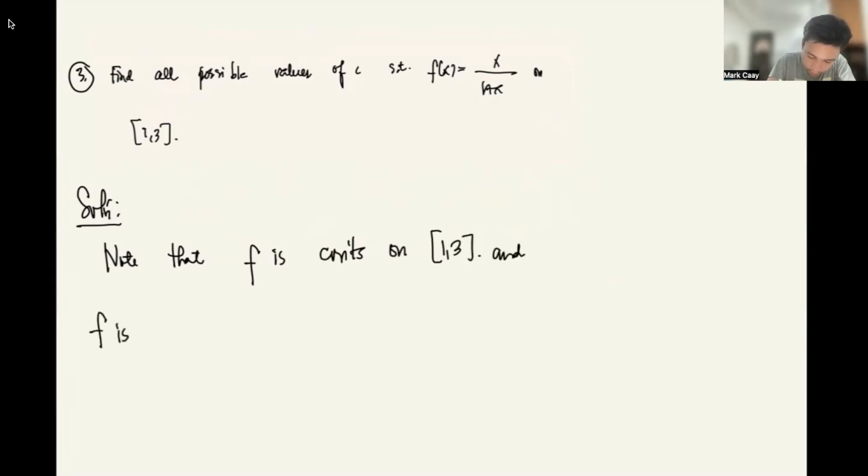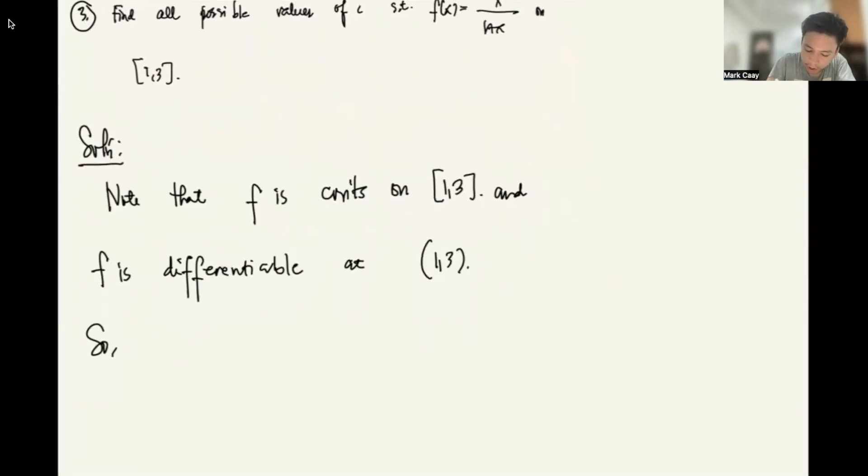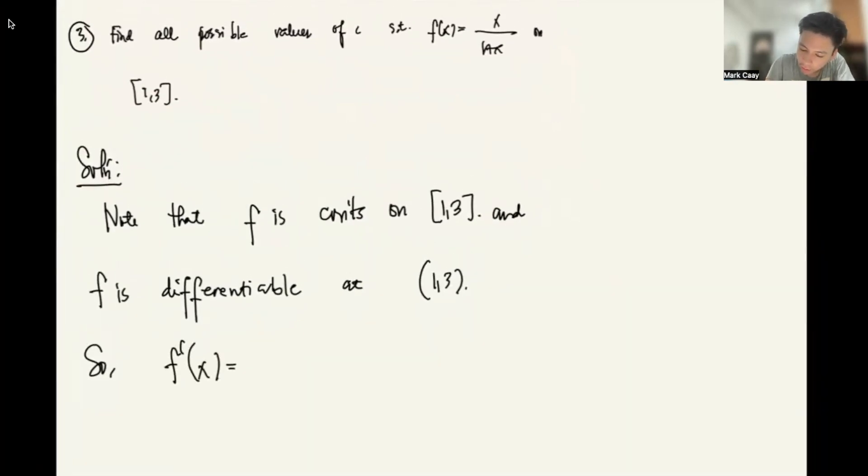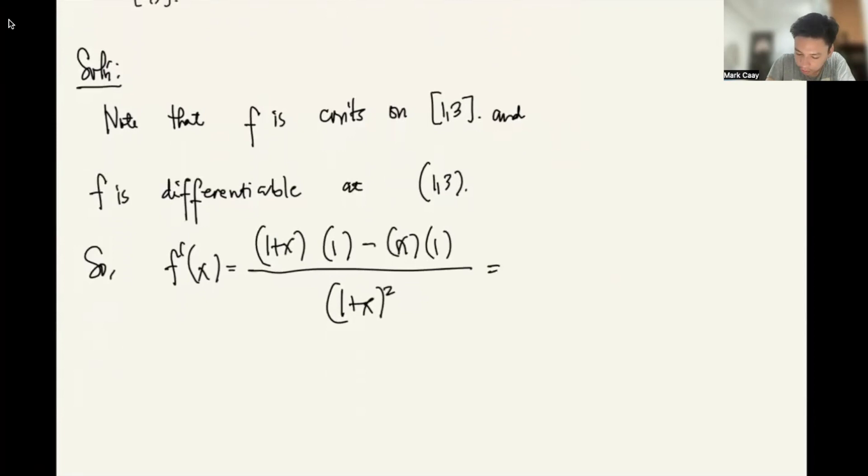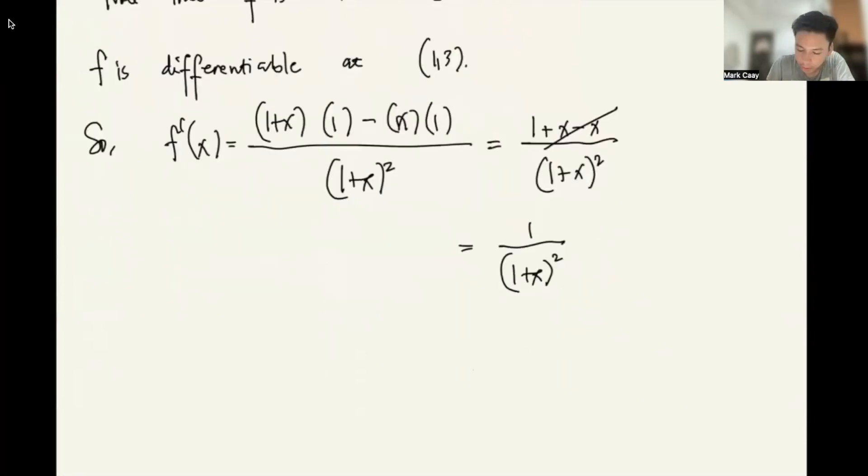And f is differentiable. We can take the derivative for that at (1,3). How do we get the derivative? So f'(x), this is derivative of a quotient too. So low d high minus high d low over low squared. So low, that's (1+x). Derivative of high which is 1, minus x. Derivative of low which is 1. All over (1+x) squared. Which is equal to (1+x-x) all over (1+x) squared. These cancel. So you'll have 1 over (1+x) squared.